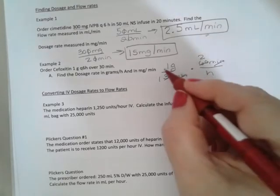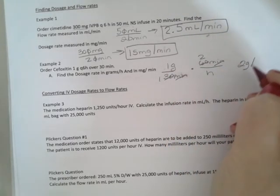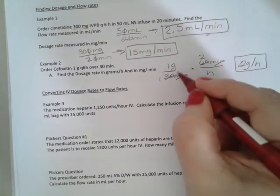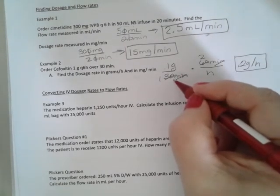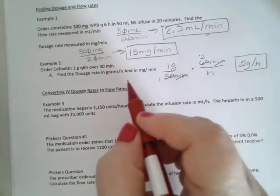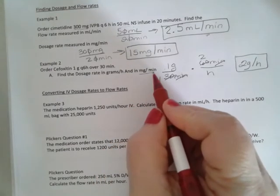And that should make sense because if you're giving one gram in 30 minutes, you double 30 minutes, you have an hour. You'd have to double the one gram.